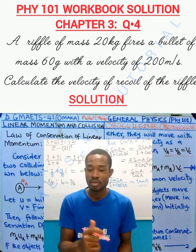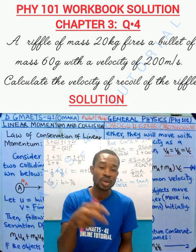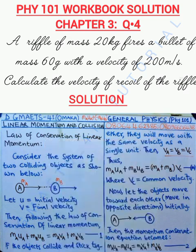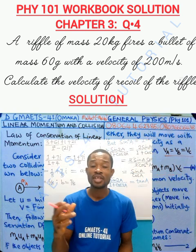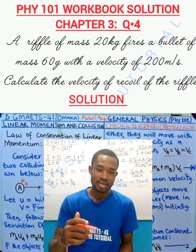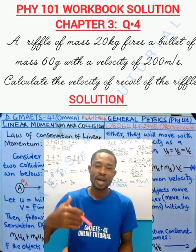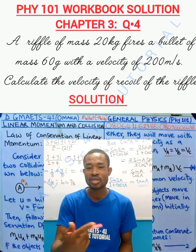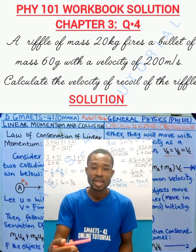This equation is used when two objects are colliding and moving in the same direction. You also see equation 1B with VC, which is common velocity. When two objects collide and stick together — they do not go separate ways — that is the case of a many-to-one kind of collision. As they stick together, they move together in one direction with the same velocity.